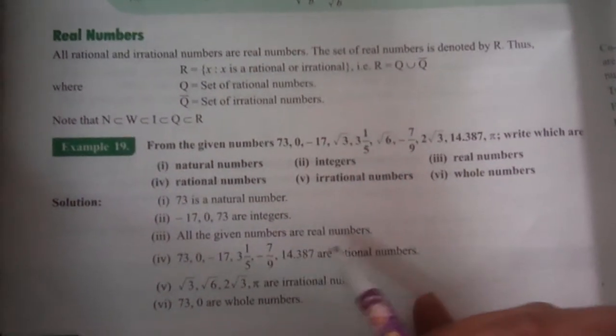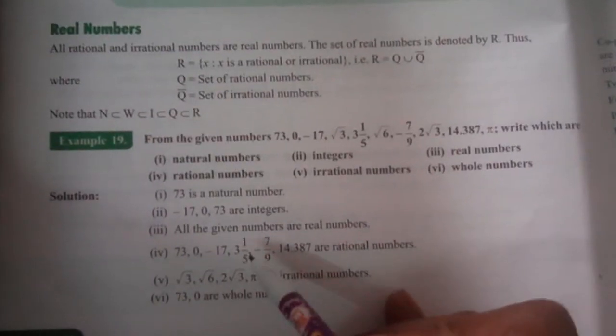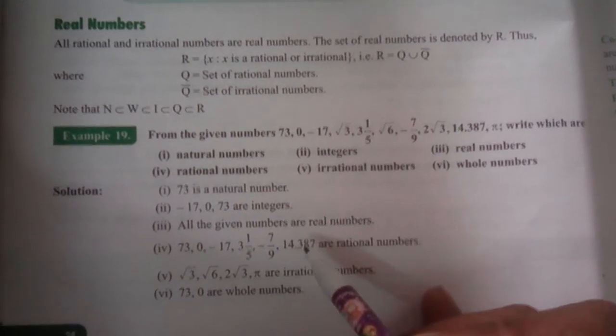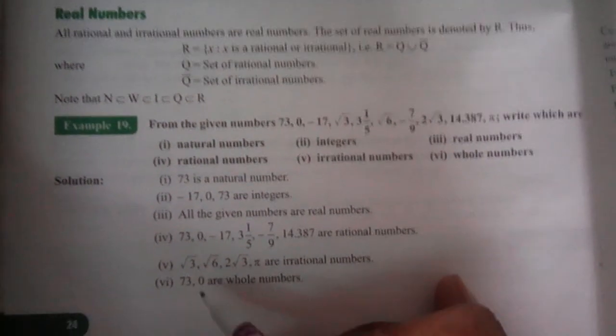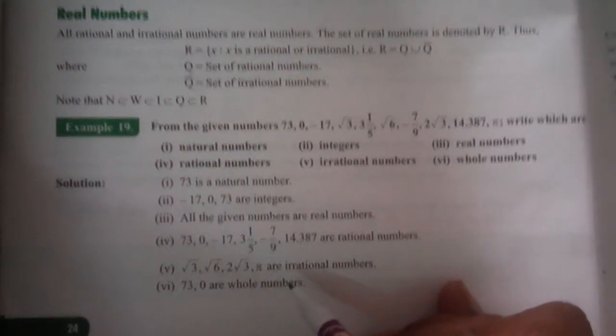All the given numbers are real numbers. 73, 0, -17, 1/5, -7/9, and 14.387 are rational numbers. √3, √6, 2√3, and π are irrational numbers. 73 and 0 are whole numbers.